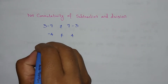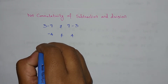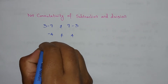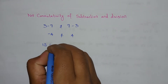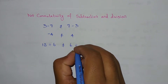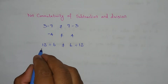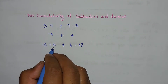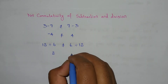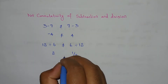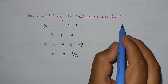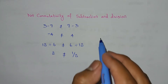Division is also not commutative. For example, 12 divided by 6 is not equal to 6 divided by 12. 12 divided by 6 gives 2, while 6 divided by 12 gives 1 by 2. Since 2 is not equal to 1 by 2, subtraction and division are both not commutative in nature.